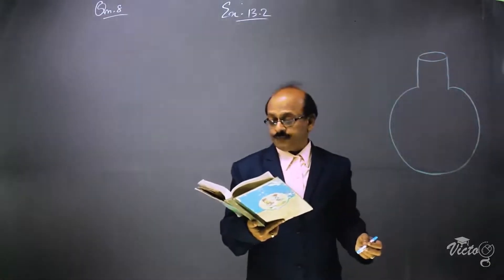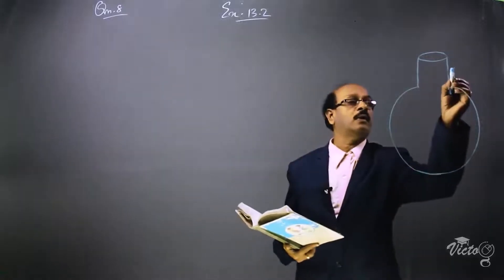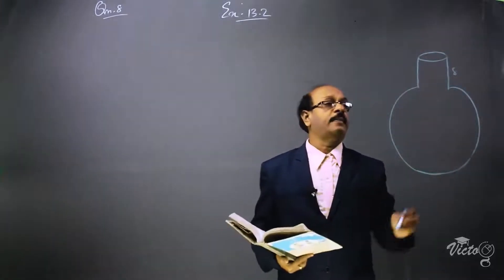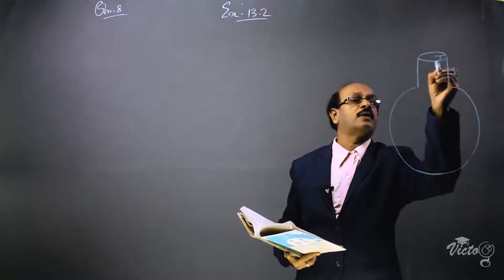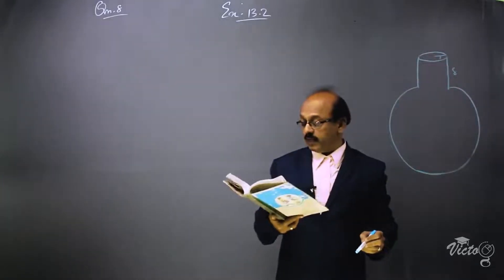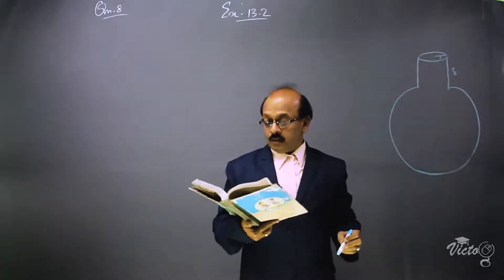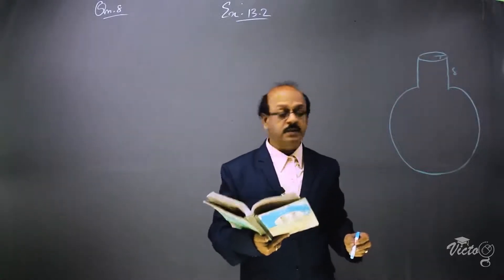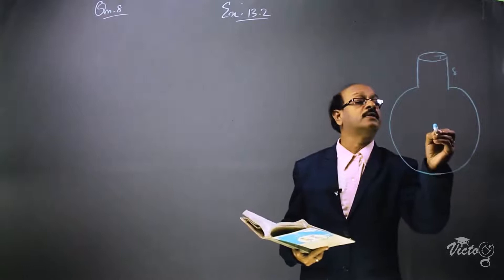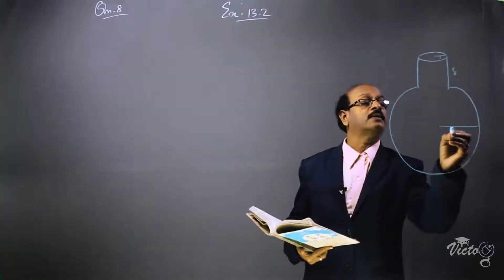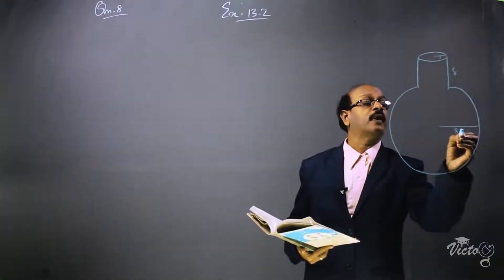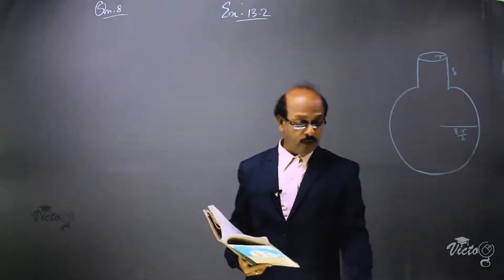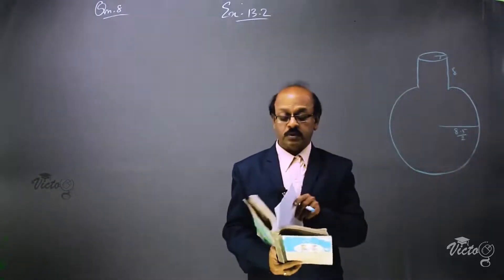For the cylindrical part, it is 8 centimeters long and 2 centimeters in diameter, so the radius is 1 centimeter. For the spherical part, the diameter is 8.5 centimeters, so the radius is 8.5 divided by 2 centimeters. We have to find the volume.